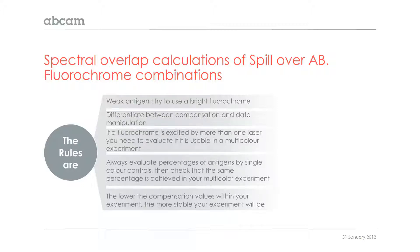Always evaluate percentages of antigens using single color controls — this is very important. If you're setting up a 10-color experiment, run your single color controls for each of those 10 antigens. Make sure you know roughly what those 10 antigen positive values are, and when you run your multicolor experiment, make sure you're getting more or less those same percentages. The lower the compensation value within your experiment, the more stable your experiment will be.